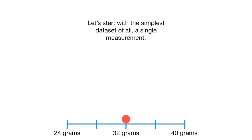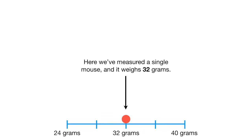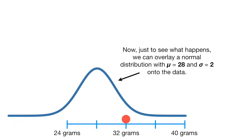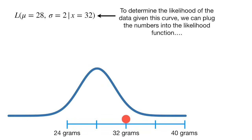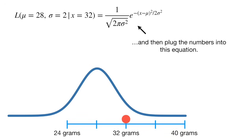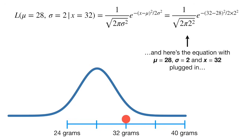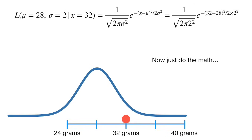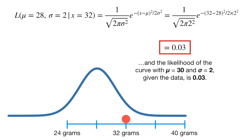Let's start with the simplest dataset of all — a single measurement. We've measured a single mouse and it weighs 32 grams. Just to see what happens, we can overlay a normal distribution with mu equals 28 and sigma equals 2 onto the data. To determine the likelihood of the data given this curve, we plug the numbers into the likelihood function with mu equals 28, sigma equals 2, and x equals 32. Just plug and chug, and the likelihood of the curve with mu equals 28 and sigma equals 2 given the data is 0.03.